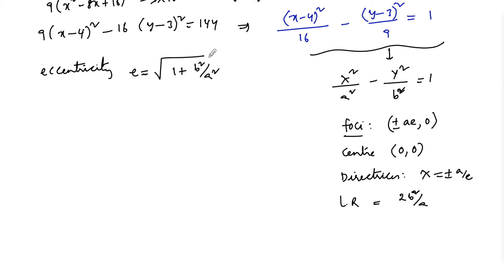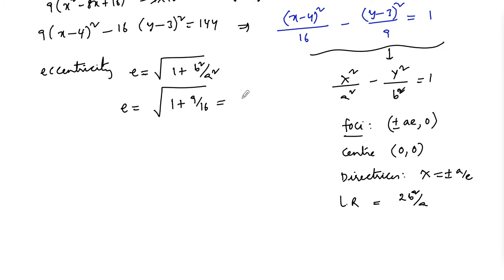Comparing with the standard equation, a² = 16 and b² = 9. Eccentricity e = √(1 + b²/a²) = √(1 + 9/16) = √(25/16) = 5/4.